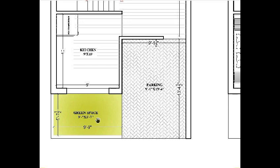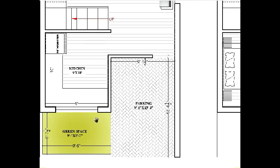For the green space, horizontally here to here is 9 feet 9, and vertically here to here is 5 feet 7. After this is the public area.